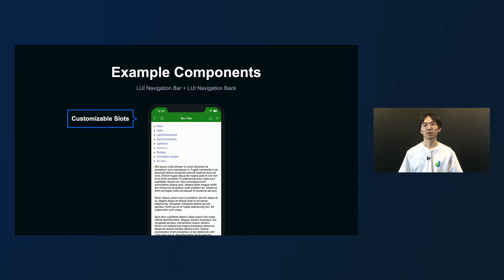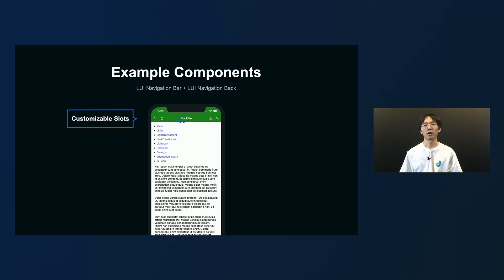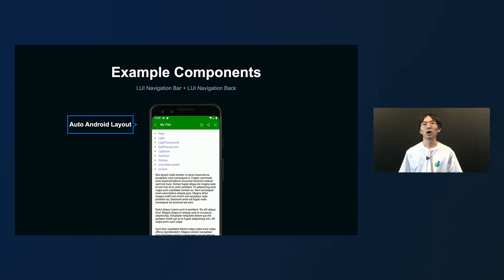And this is another header that looks slightly different than the previous one. With the LUI navigation bar component, developers have complete control over what the headers look like and behave like. We provide three customizable slots: the title in the center, the action area on the right, and the button on the left. Furthermore, our component can be automatically adapted to different platforms, displaying different UIs according to the preference of the platform. For example, components can be automatically changed to the Android layout without any extra work from developers — as you can see from this screen. It's fantastic!